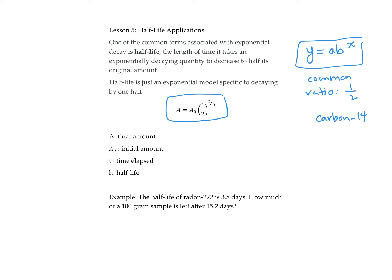The common ratio is specifically a half. And then the X is replaced by t over h. And that's because the number of times it reduces in half depends on two things. It depends on how much time has passed and how long it takes to reduce in half. So for example,